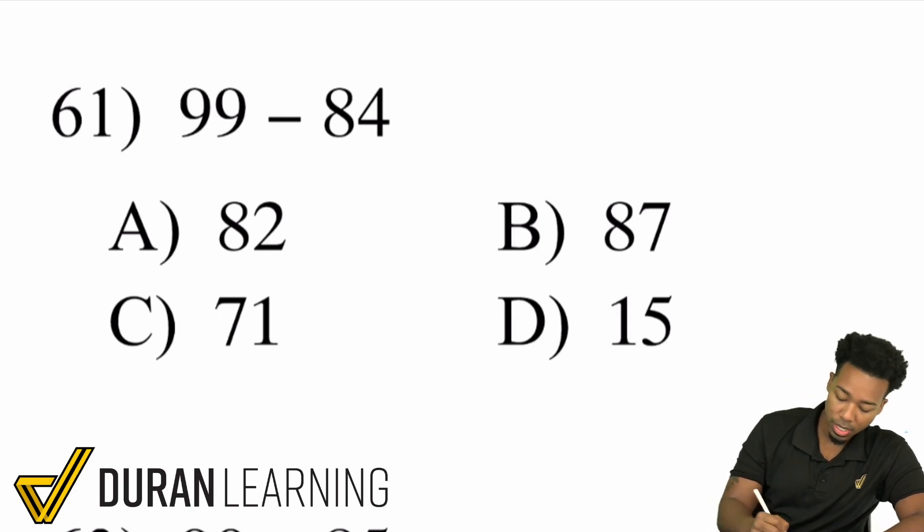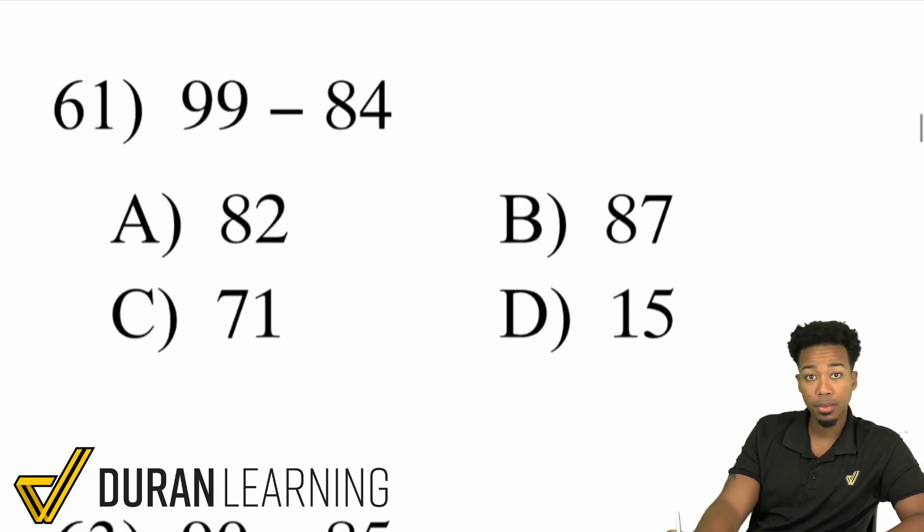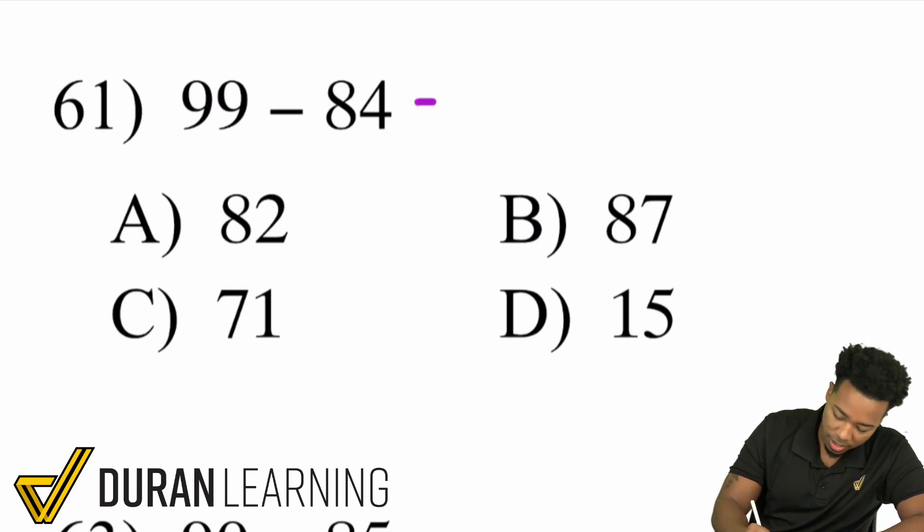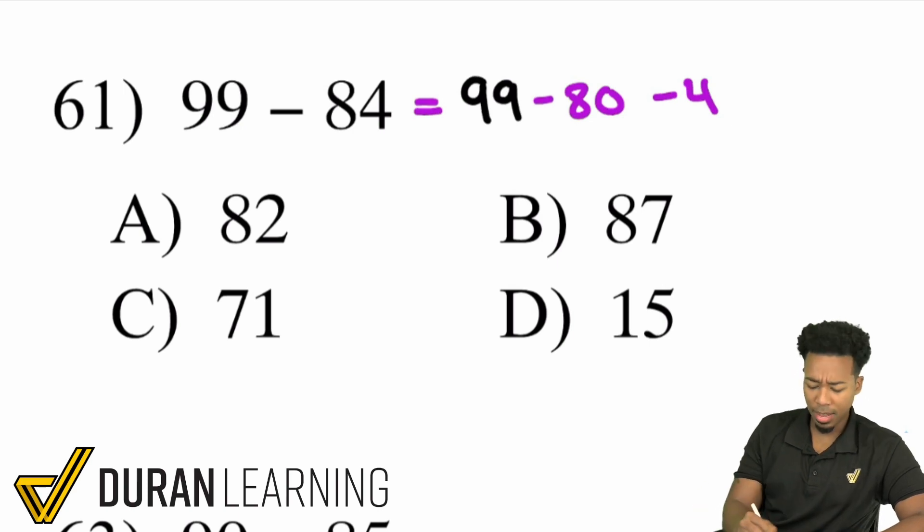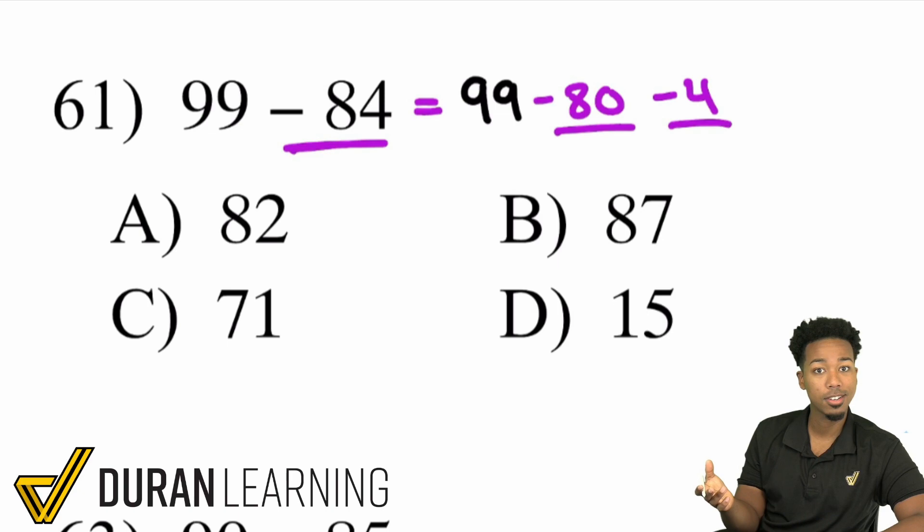So when you're looking at 99 minus 84 there's one way you can think about it there's a bunch of ways but here's one easy way. You can think of it as 99 minus 80 and then minus 4. Because think about it if you take away 80 and then you take away 4 is that not the same as taking away 84? Yeah.